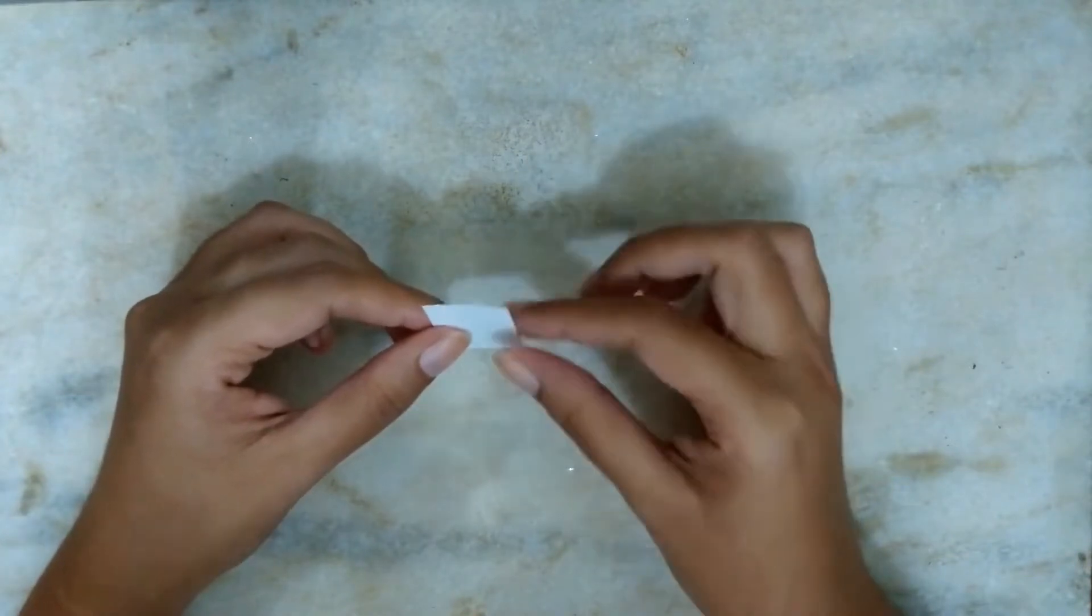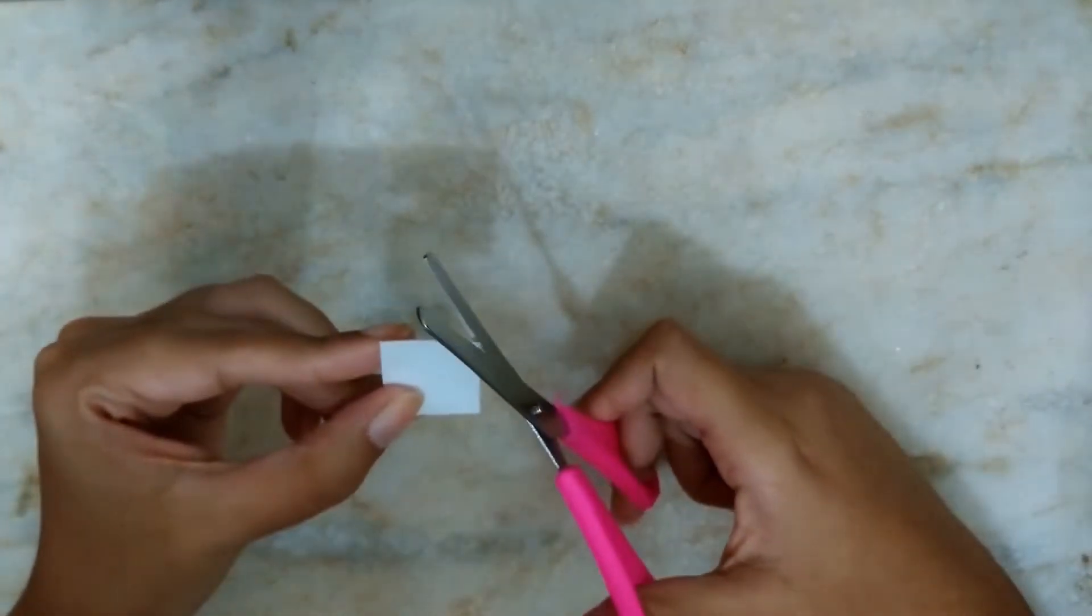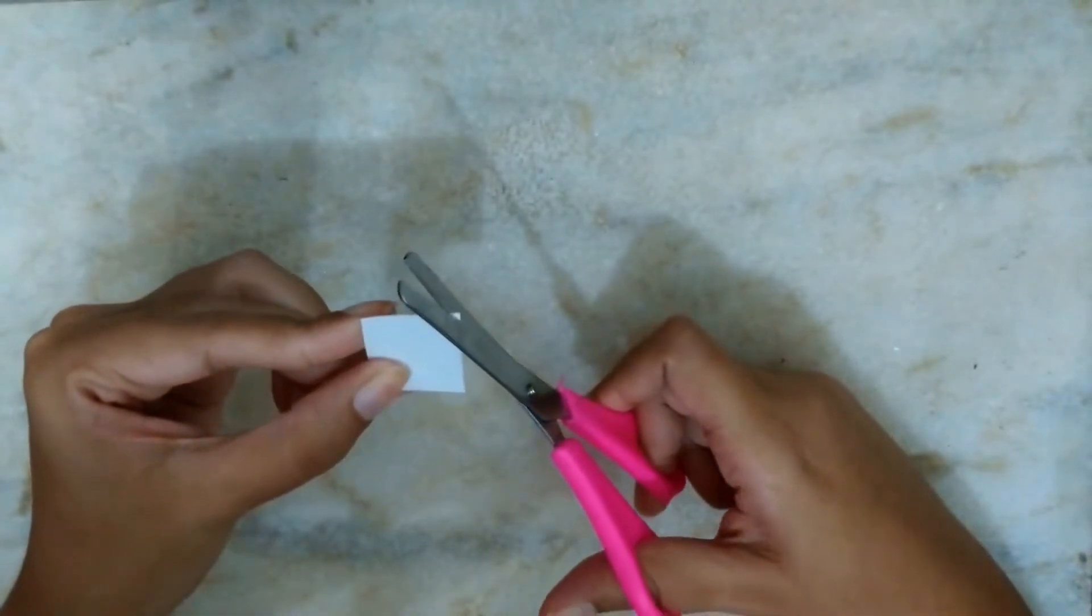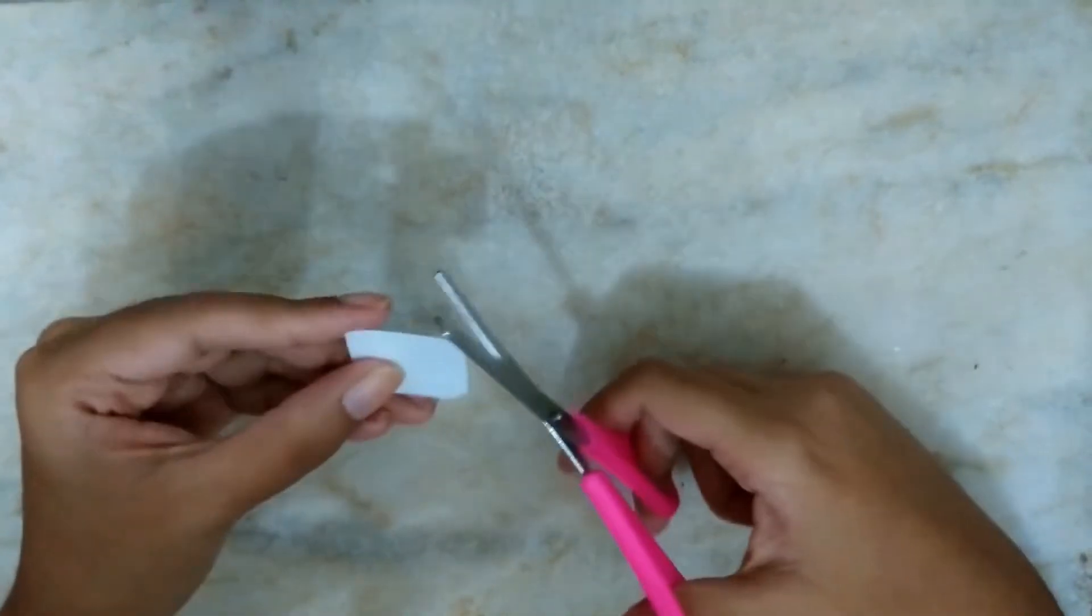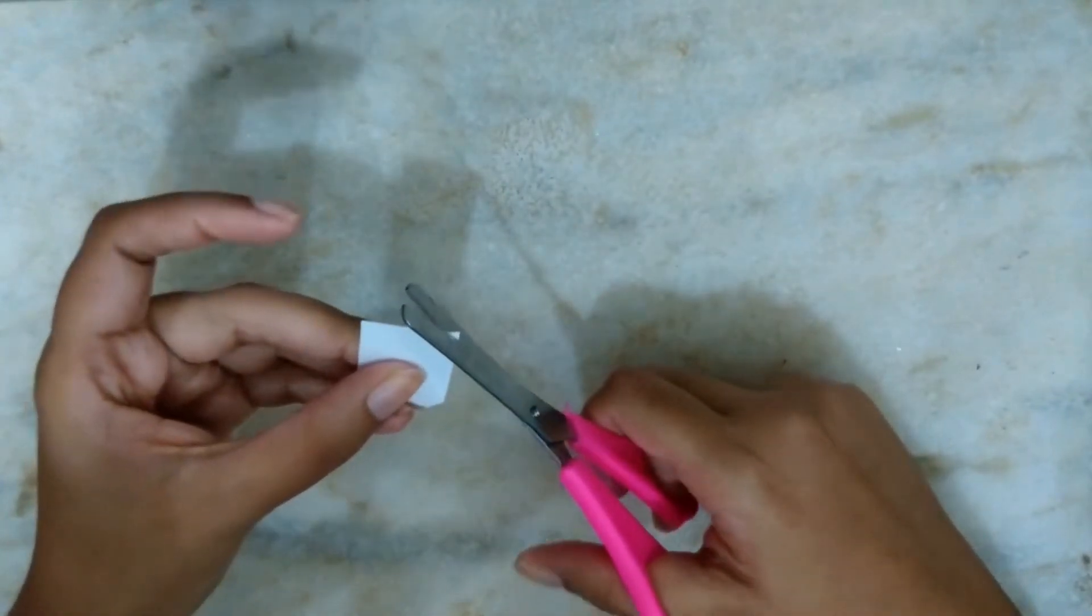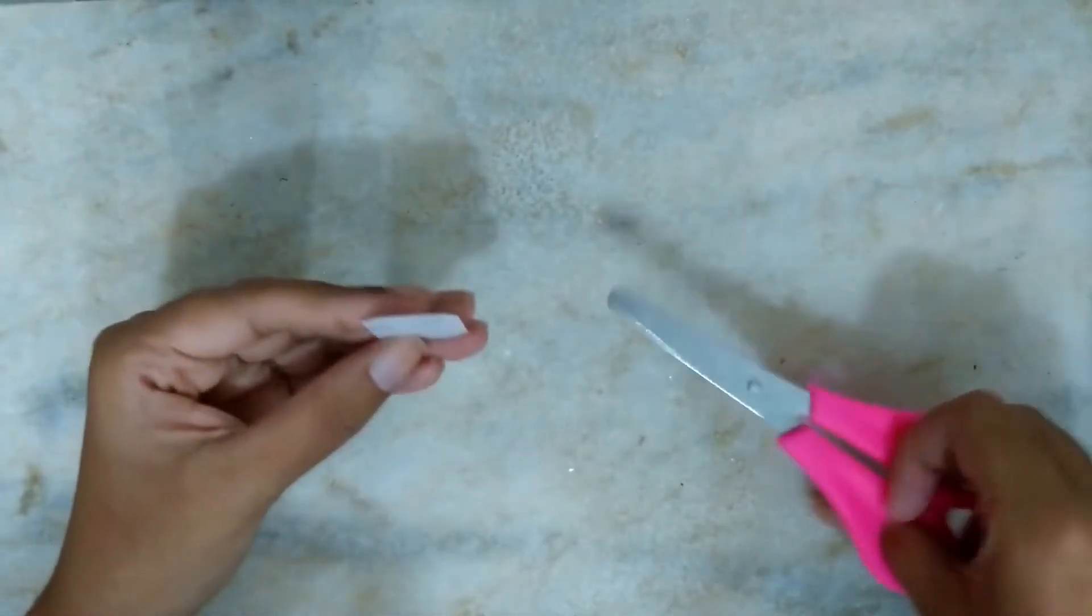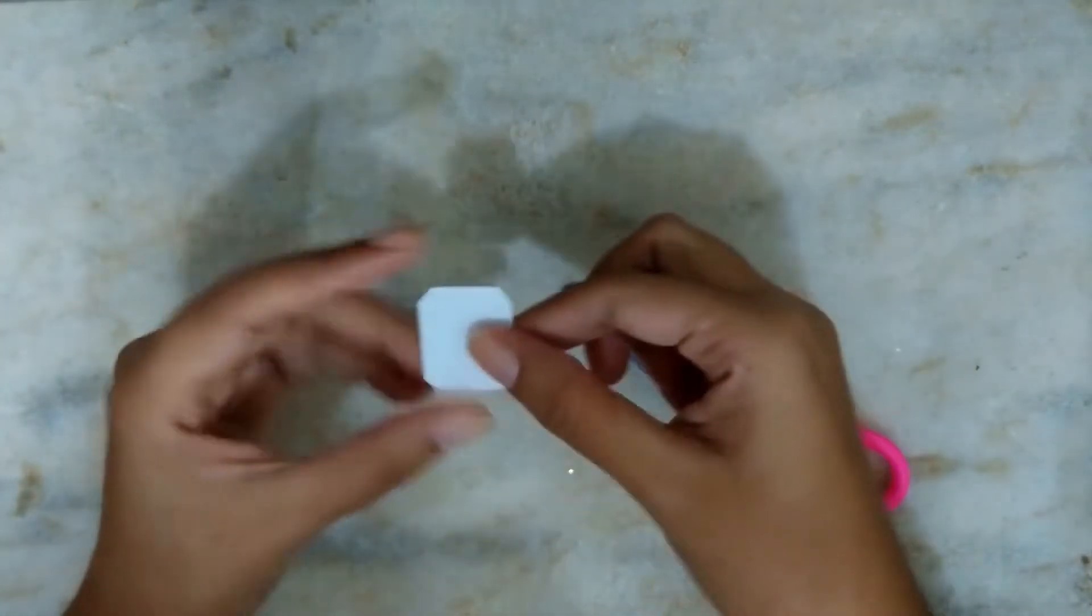Now that I already have a piece the size that I want, I'm going to come here to these little tips and cut like this. Leaving it this way.